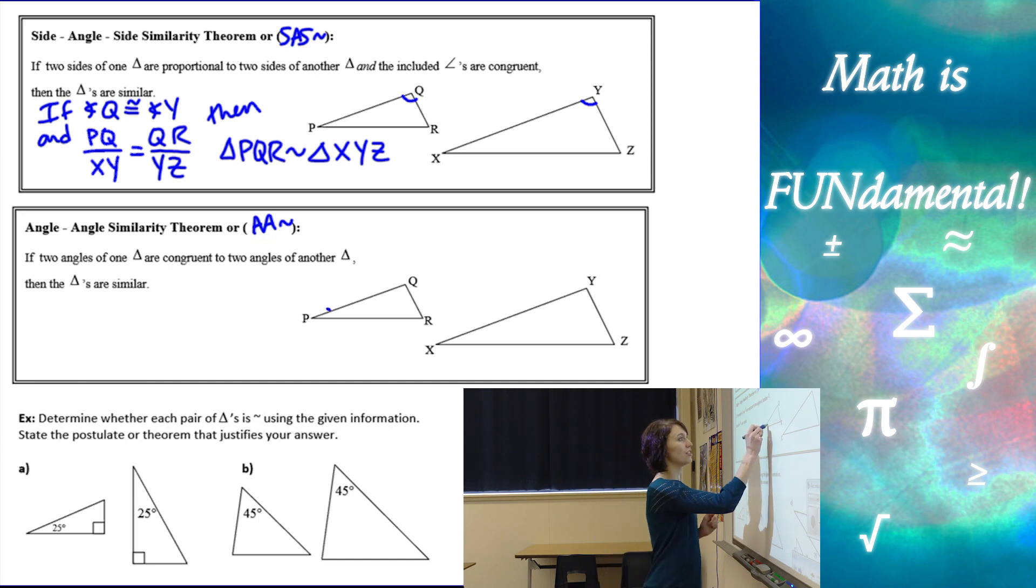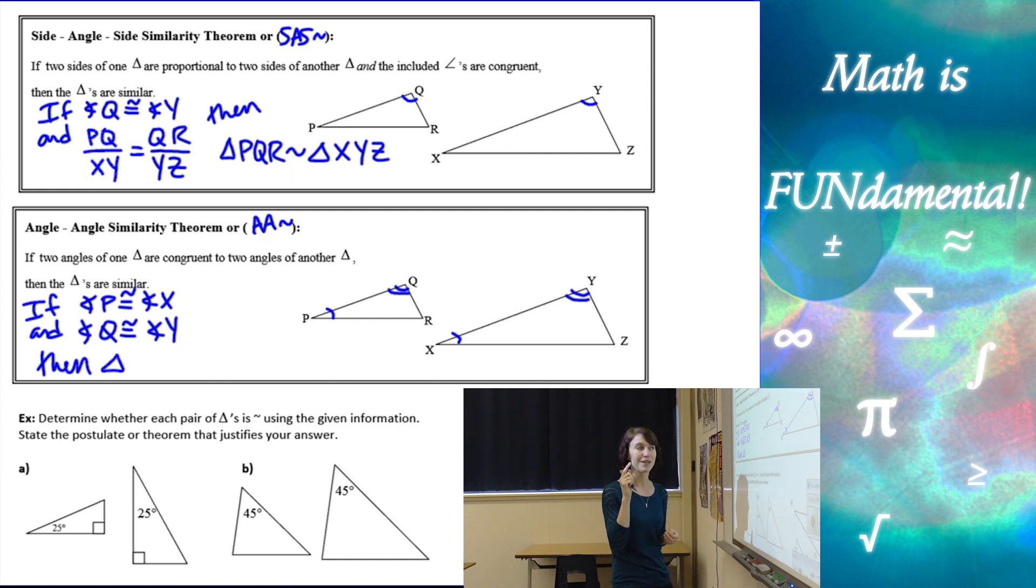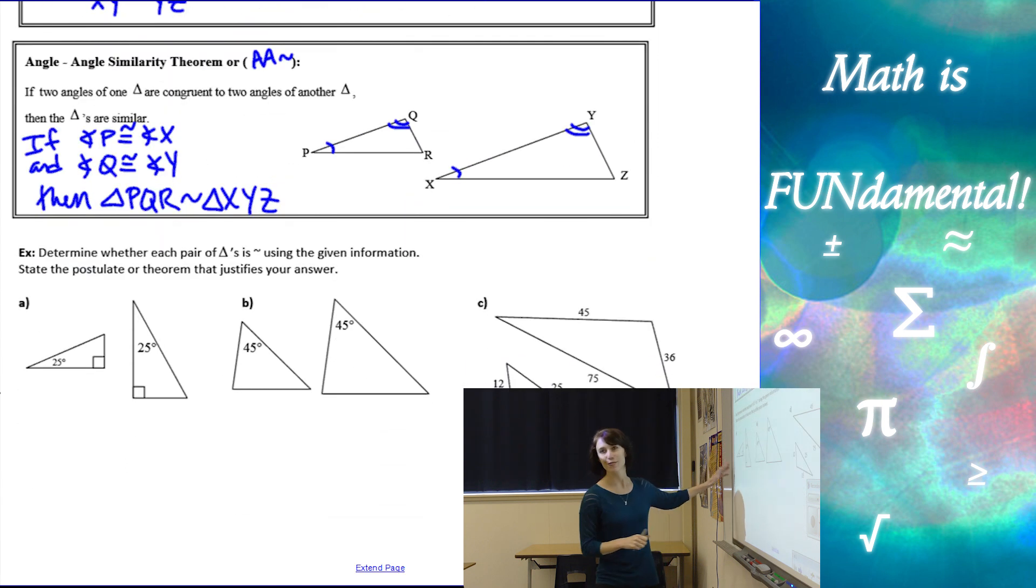All we need are two congruent angles. So if I have the given information or somehow can find the information that two angles are congruent. So if angle P was congruent to angle X and angle Q is congruent to angle Y, then I can simply skip to my similarity statement. Triangle PQR is similar to triangle XYZ. That one's the short and sweet one. I love it.